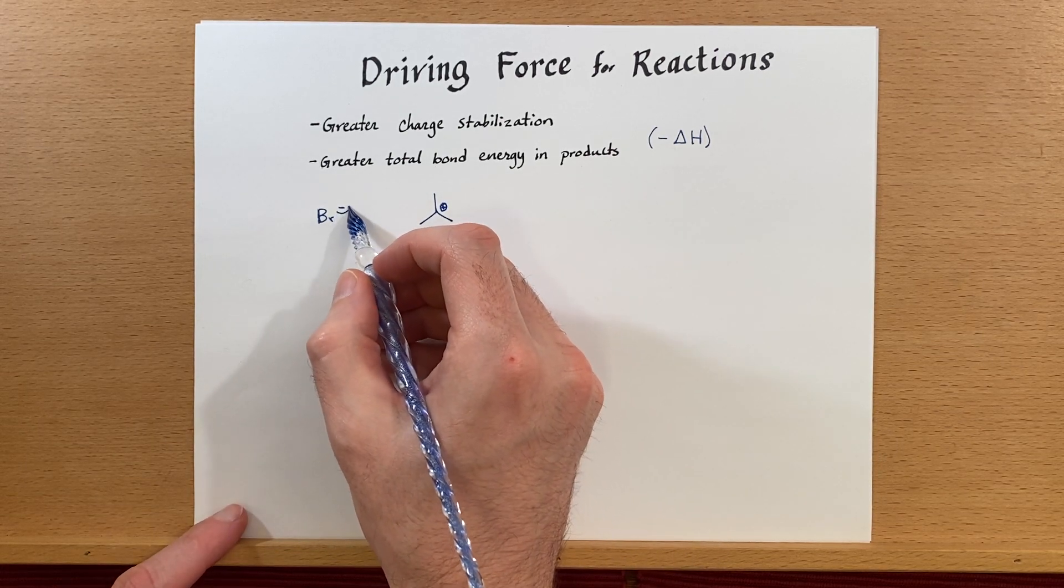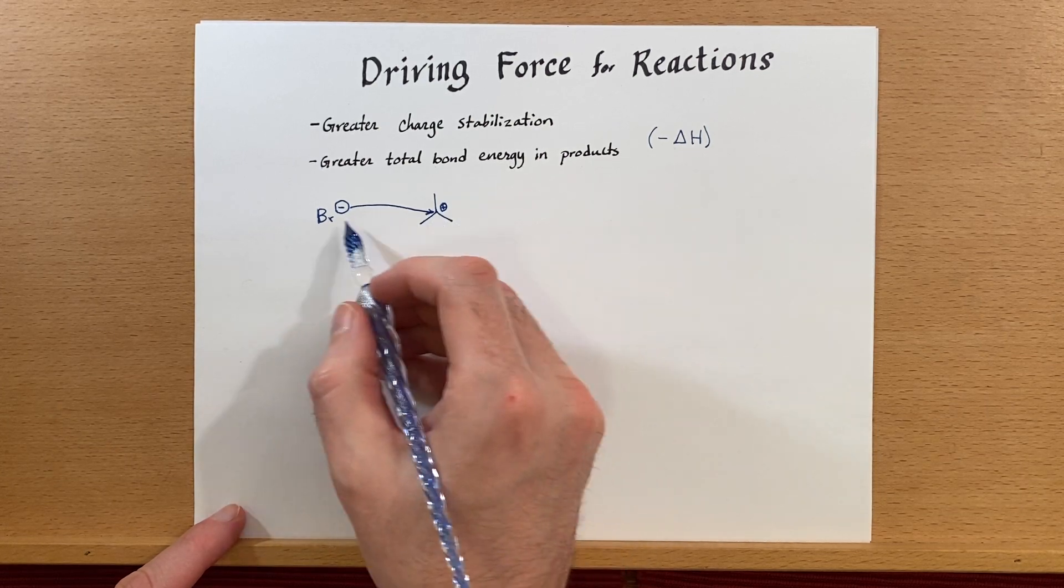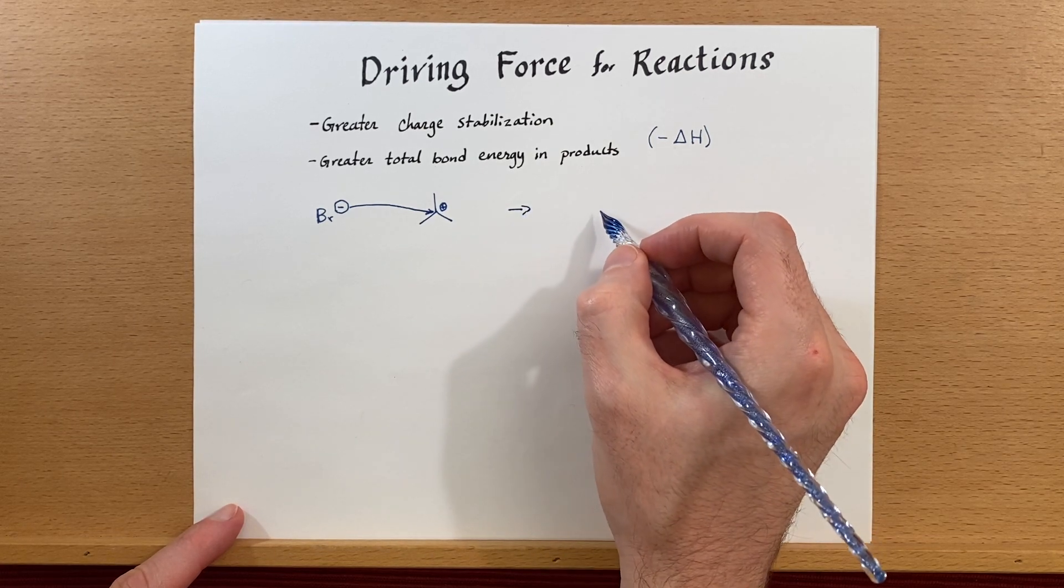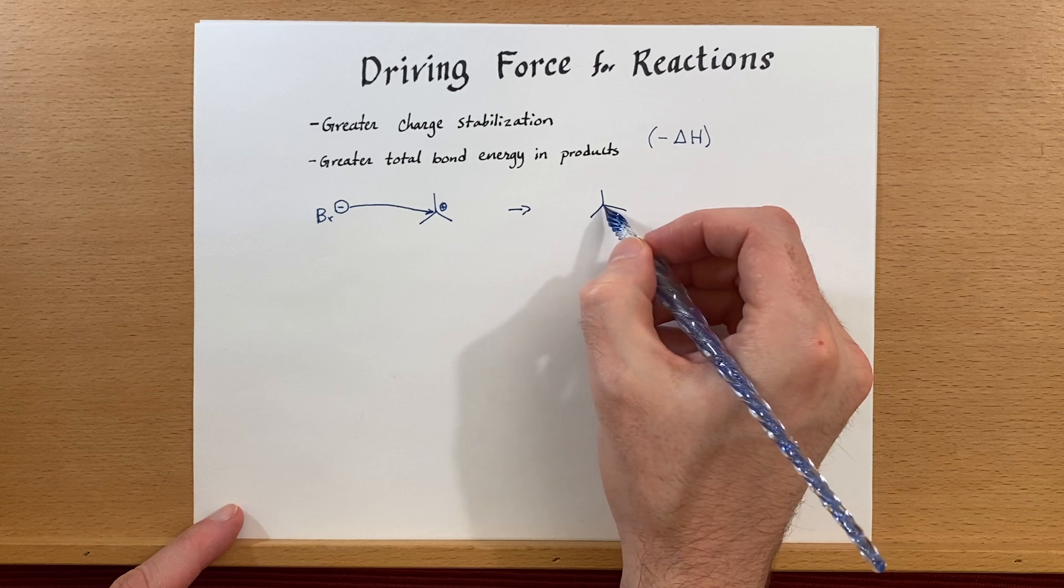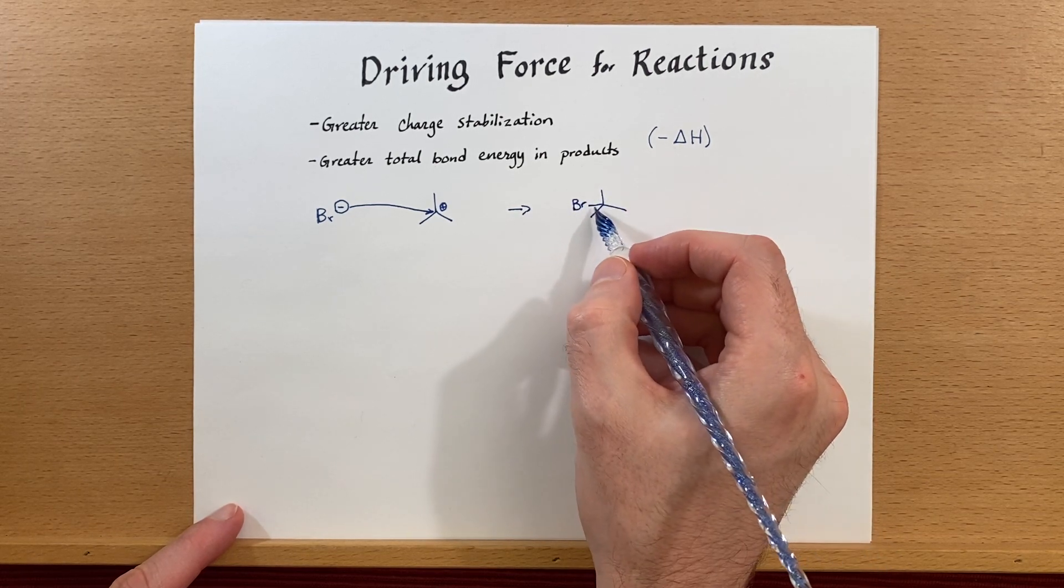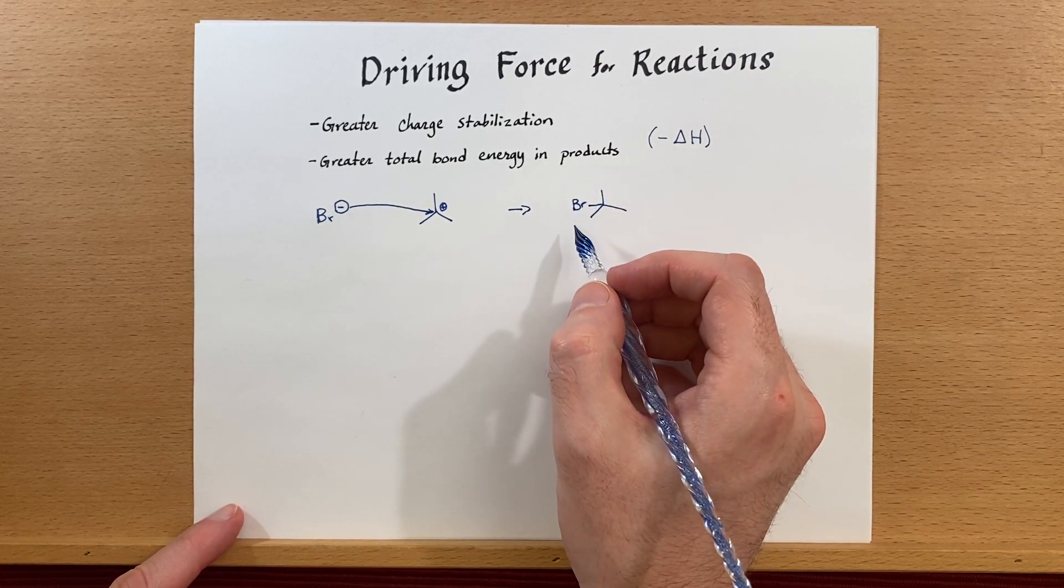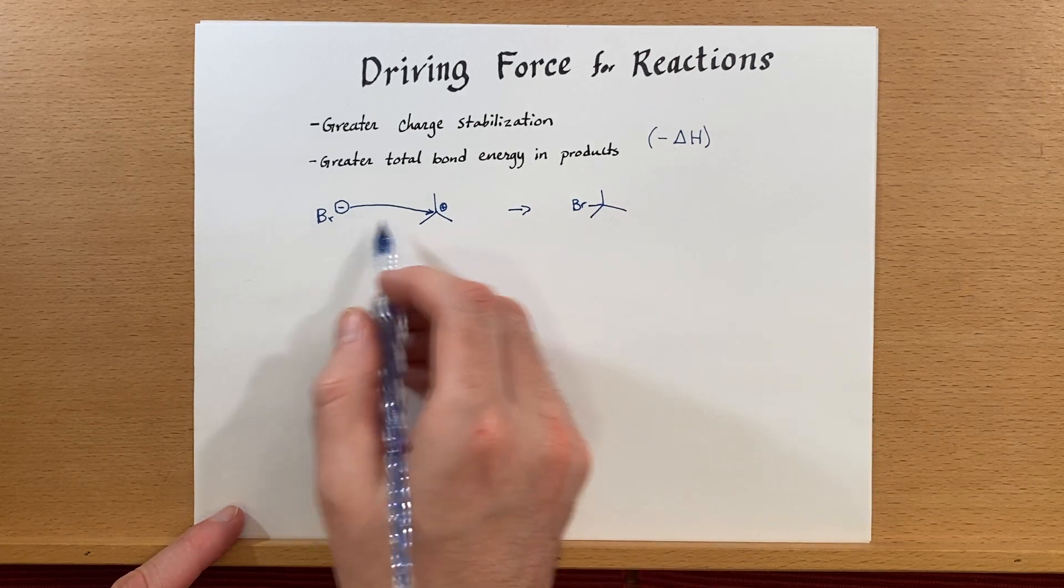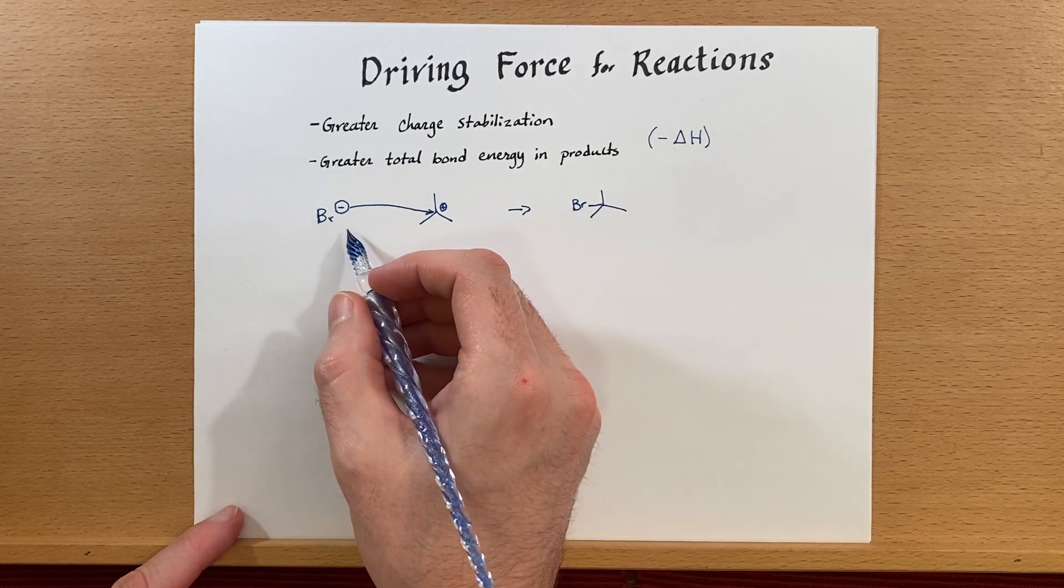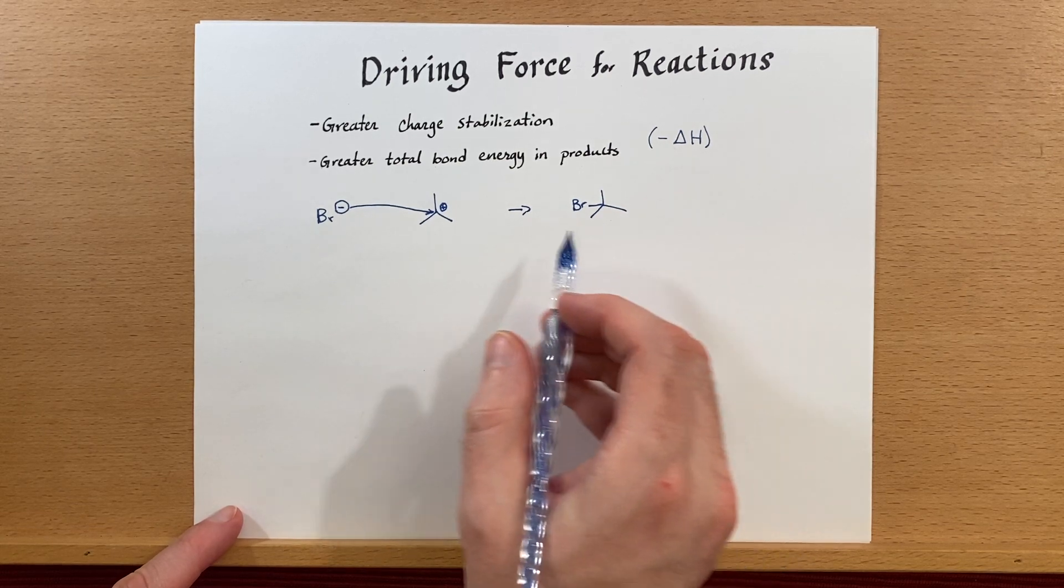If we were to take this negative charge and combine it or coordinate it with our carbocation, then we would have no charges left in our product. And we would have also generated a new sigma bond right here. Both of these driving forces are at play, so this reaction should be fairly favored. There's no charges left, where over here there were two charges, and there's a new bond. So this is definitely favorable.